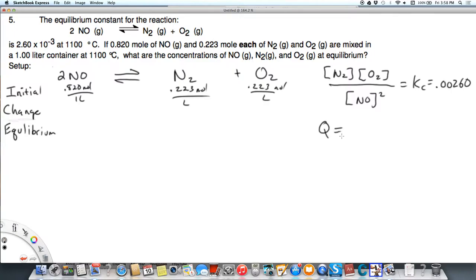We know that Q, being N2 times O2 over NO squared, we set it up the same way as KC, but then we compare it to KC. So if Q is greater than K, that means we've got too many products. We're going to go to the left. If Q is less than K, that means the bottom is greater. So that means we need to make more products. We're going to go to the right.